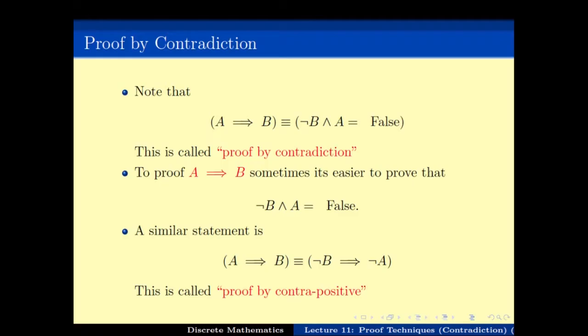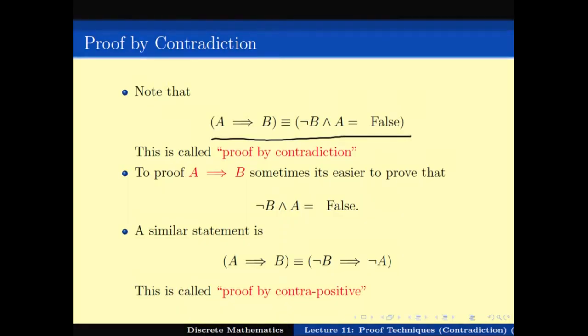In the last video lecture, we started with the new proof technique called proof by contradiction. The idea is that to prove A implies B, it is the same as proving that not-A and B is false. So sometimes instead of proving A implies B, one can end up proving that not-B and A is false. This technique is called proof by contradiction.